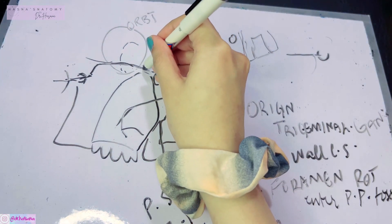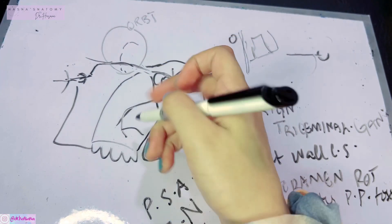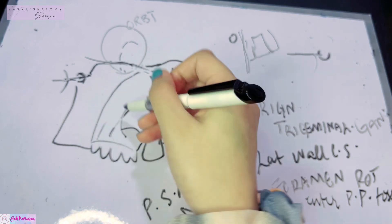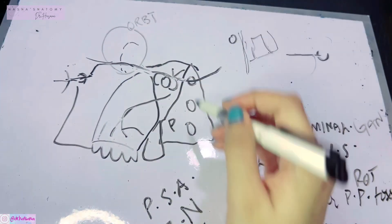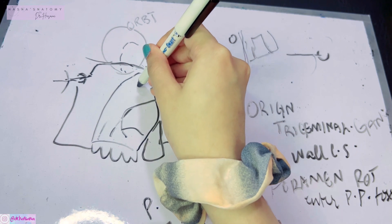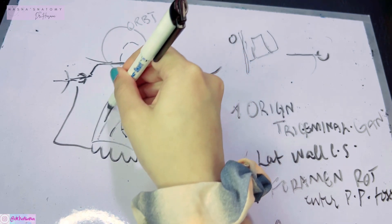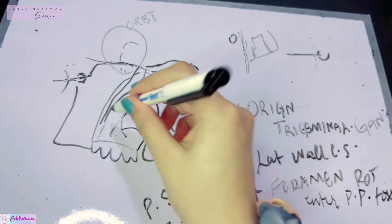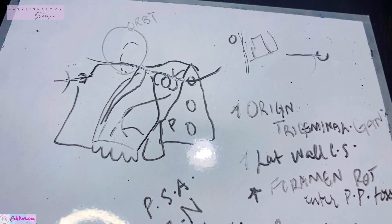Since the posterior superior alveolar nerve has been supplying the molar teeth, someone has to supply the premolars and incisors — that is what the infra-orbital nerve does. Its branches are the anterior superior alveolar and middle superior alveolar. The middle superior alveolar supplies the premolars, and the anterior superior alveolar supplies the canines and incisors. They also provide nerve supply to the maxillary air sinuses.